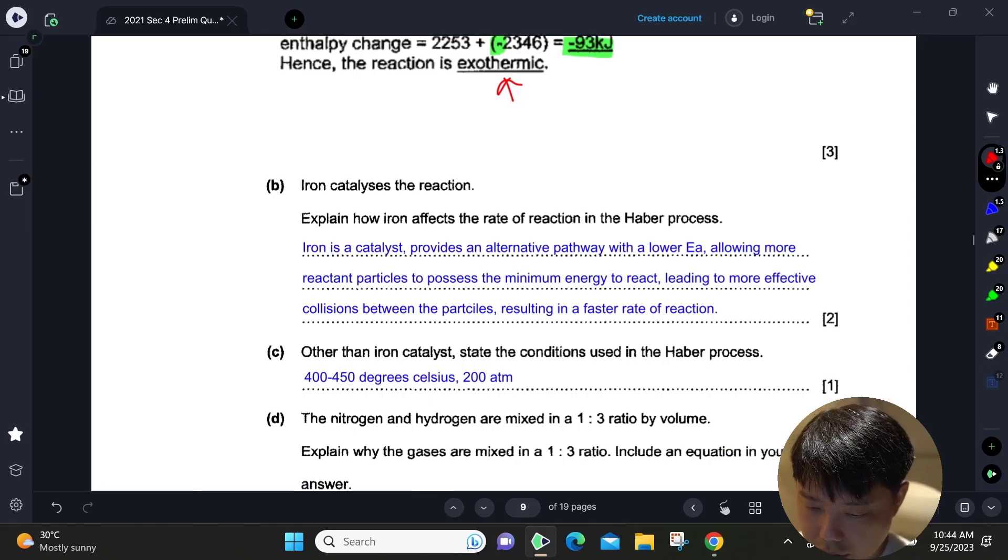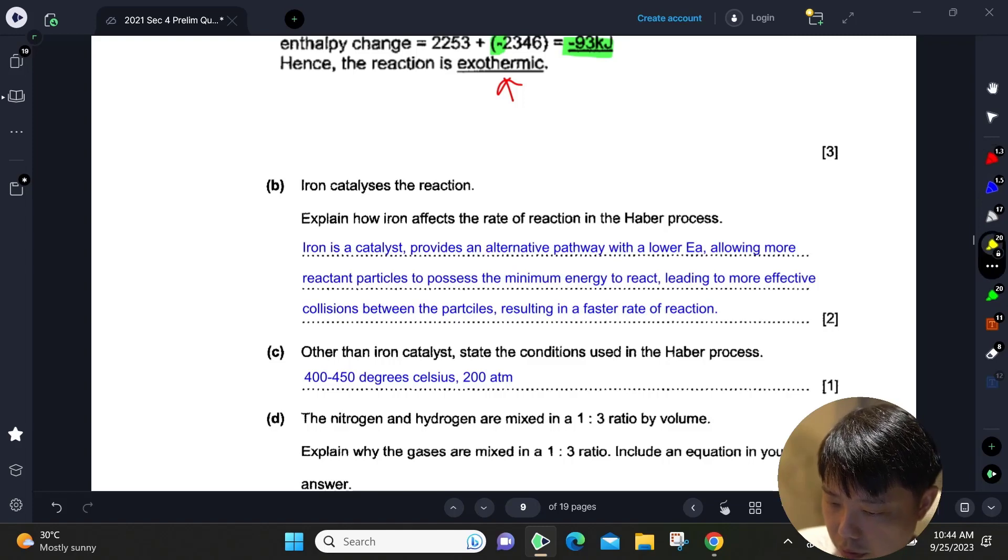Iron catalyzes the reaction. Explain how iron affects the rate of reaction. It will provide an alternative pathway with lower EA. So more particles will possess the minimum energy to react, more effective collisions, faster rate of reaction. You've got to remember this train of thought: lower EA with alternative pathway, so more particles have the minimum EA, more effective collisions, faster rate of reaction.